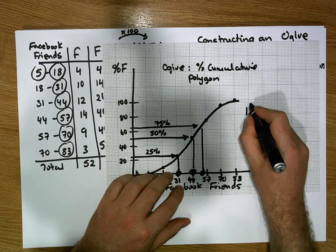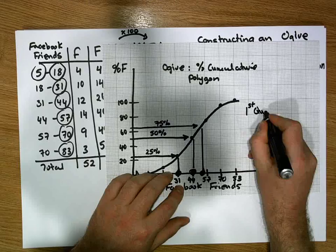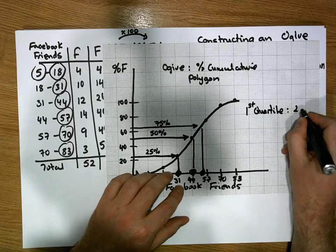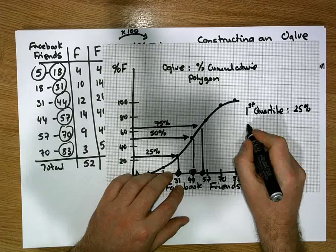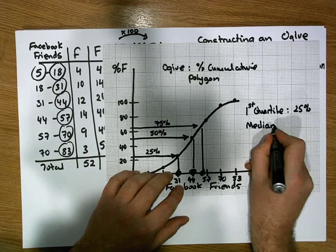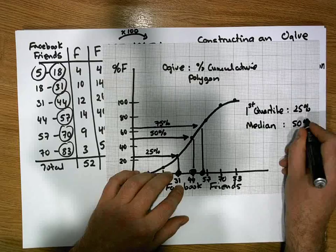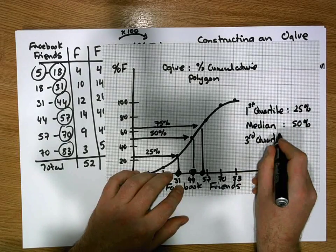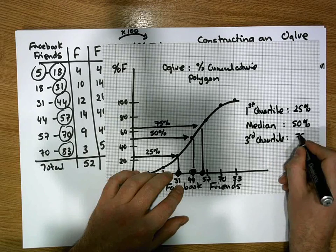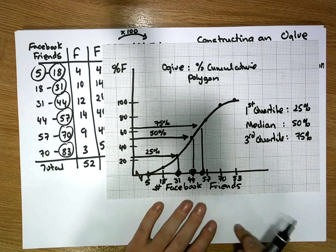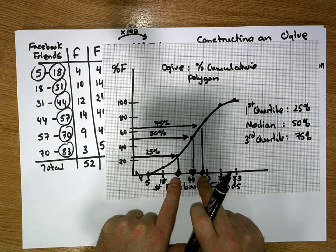The first quartile is at the 25% mark. The second quartile or the median is at the 50% mark. [Third quartile] is at the 75% mark. And the interquartile range is the distance between the first and the third quartile.